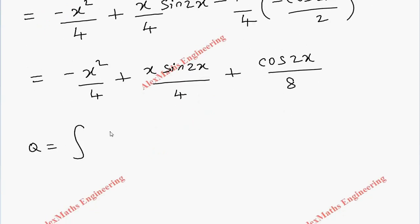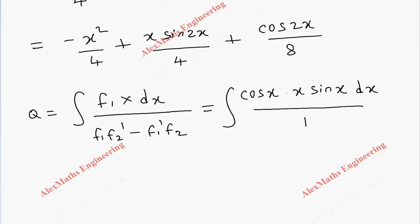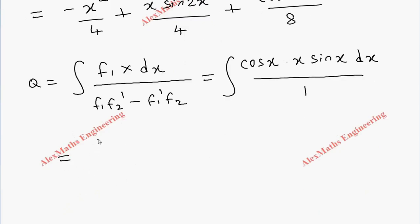Next, q = ∫(f₁ · X dx) / 1. Here f₁ = cos x and X = x sin x, and the denominator is 1. So we need q = ∫x sin x cos x dx.